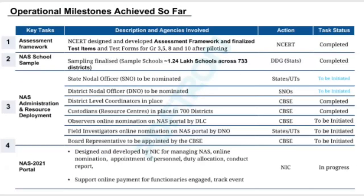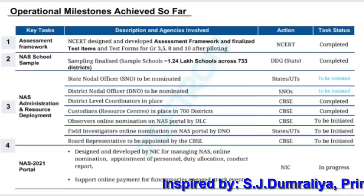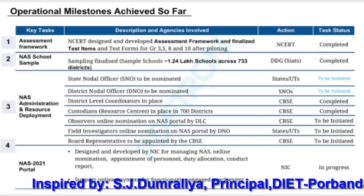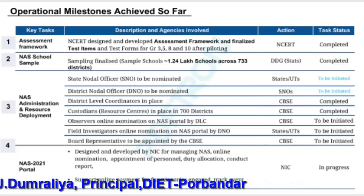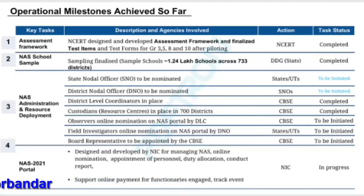NCERT operational milestones achieved so far: Key tasks — assessment framework — the board agency NCERT designed and developed the assessment framework and finalized test items and test forms for grades 3, 5, 8, and 10th after piloting. Action taken by NCERT; task status is completed. Another key task is the NAS school sample: sampling finalized sample schools of approximately 1.24 lakh schools across 733 districts. Action taken by DDG; also completed.